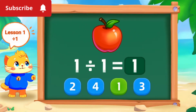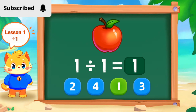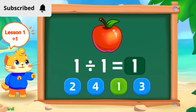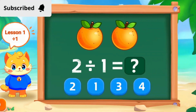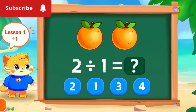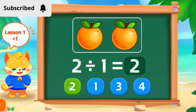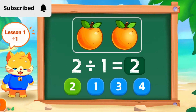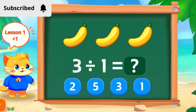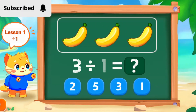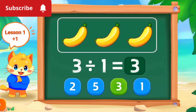1 divided by 1 is 1. 2 divided by 1 is 2. Perfect. 3 divided by 1 is 3. Nice.